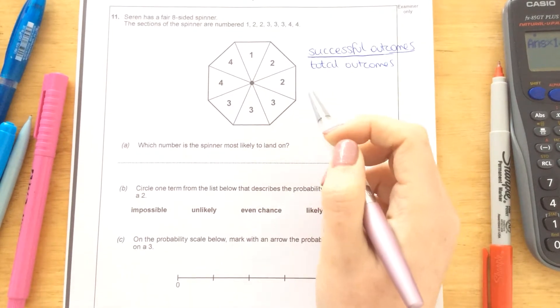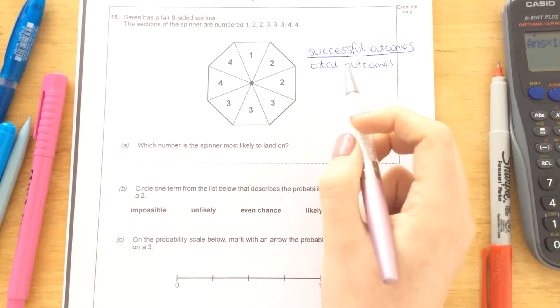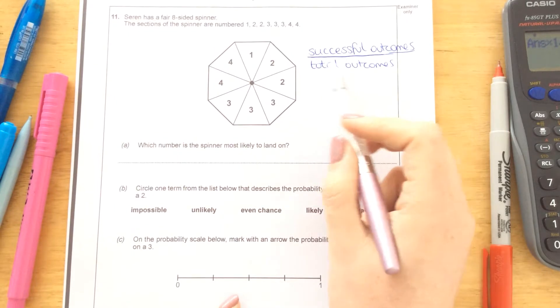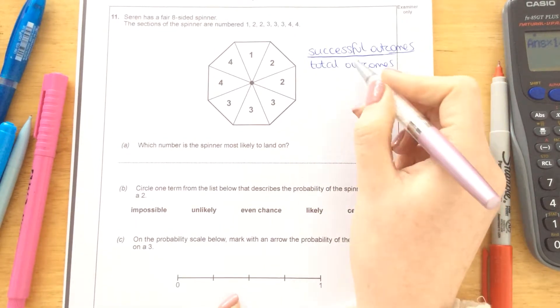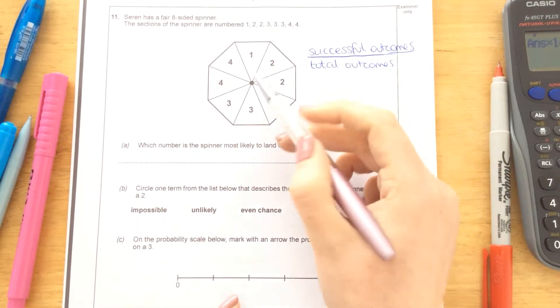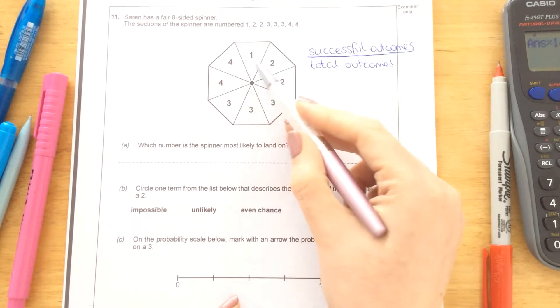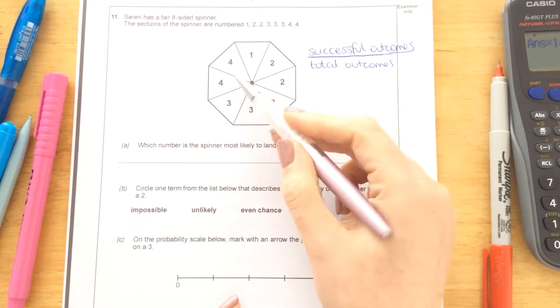This is a probability question now. Probability is written as the total outcomes on the bottom of the fraction and successful outcomes on the top. So in this case, how many total possibilities do we have?